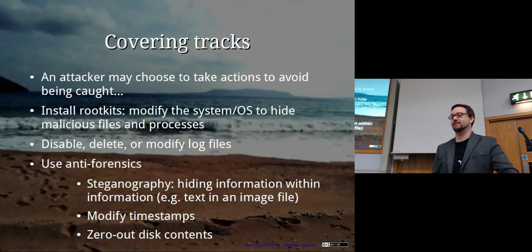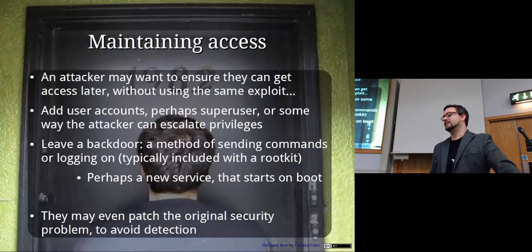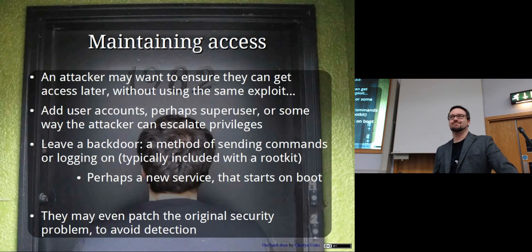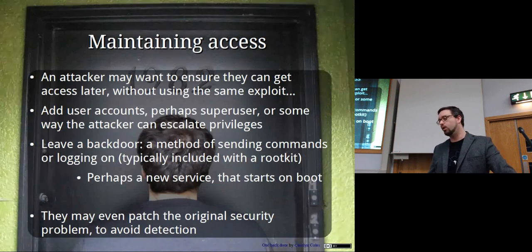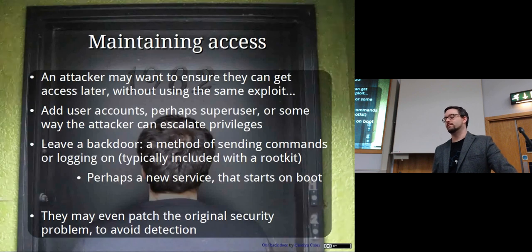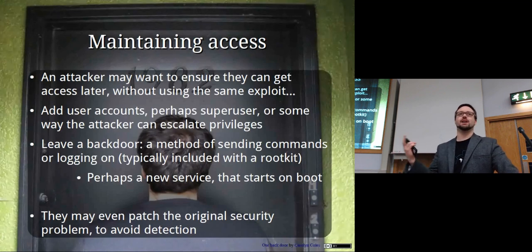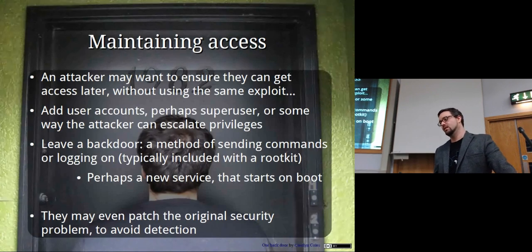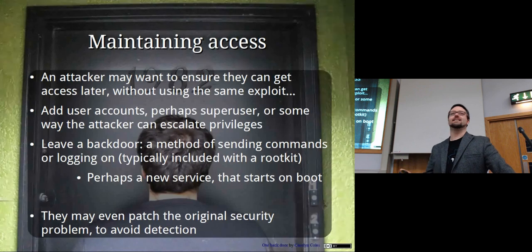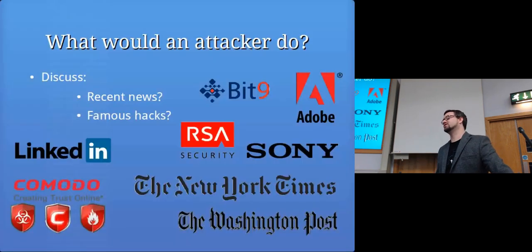For maintaining access, attackers might add a user account — possibly unnoticed depending on how many accounts exist — or include some kind of backdoor process that allows re-entry. Maybe a new service that starts on reboot. You can even use port knocking so the port isn't visible until you access it in a specific way. Attackers might also fix the original vulnerability they used to get in, so that when the target does a security audit they don't detect there was a problem — making them less likely to patch and detect it.